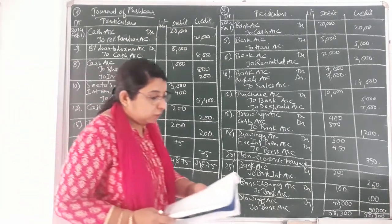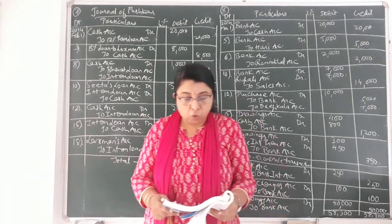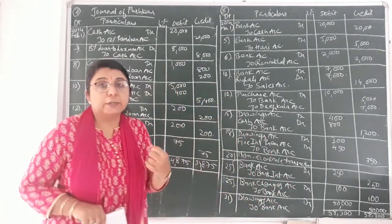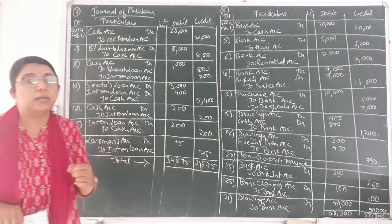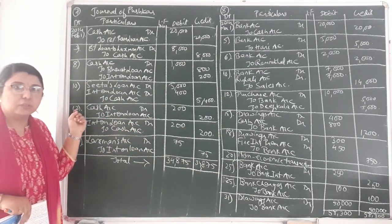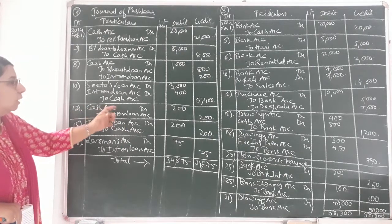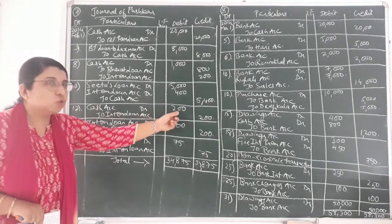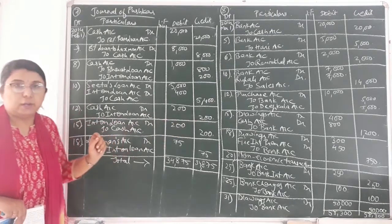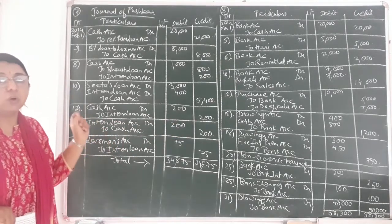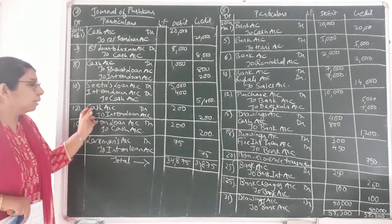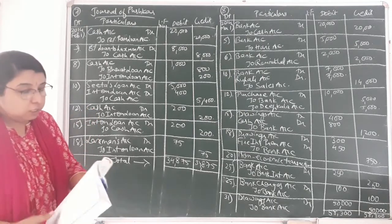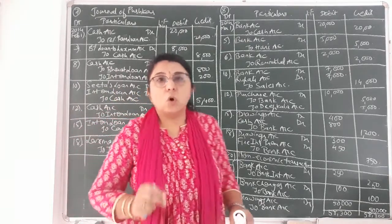Next, 12th date: received interest Rs. 200 for loan lent to Kaushal. We have received interest, so cash comes in and interest on loan is an income. The entry: cash account debit 200 to interest on loan account credit 200, because interest on loan is an income — credit all incomes and gains. Narration: being interest on loan received from Kaushal.